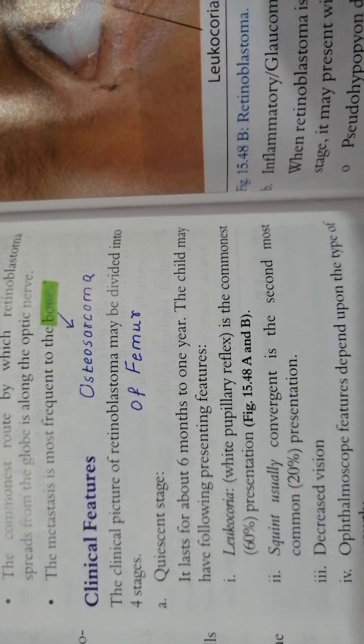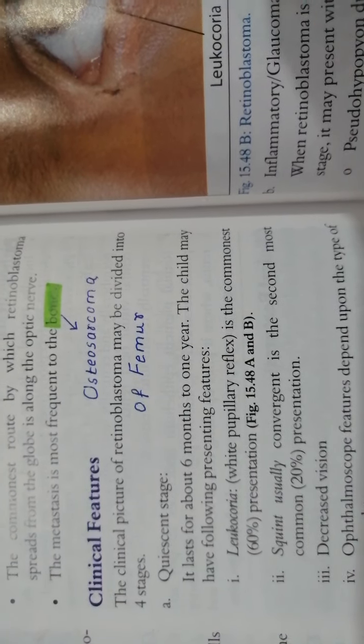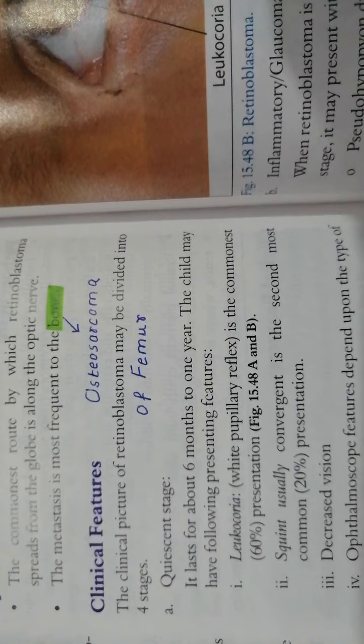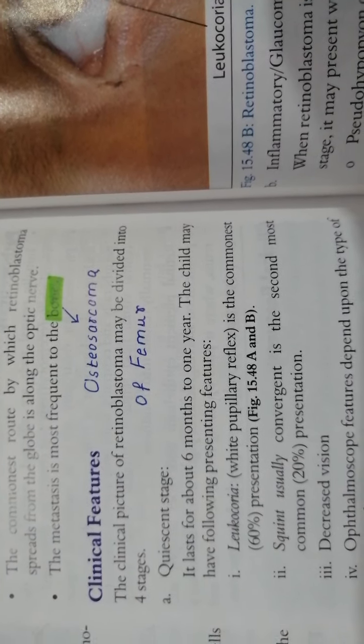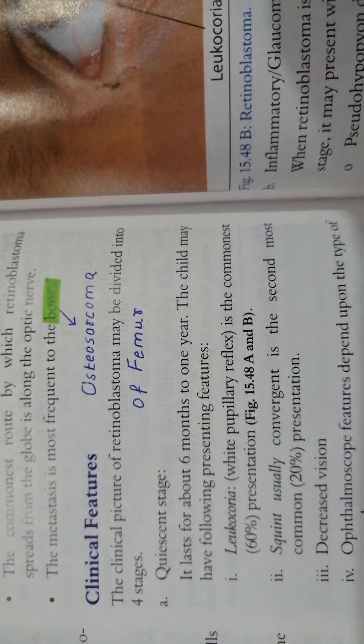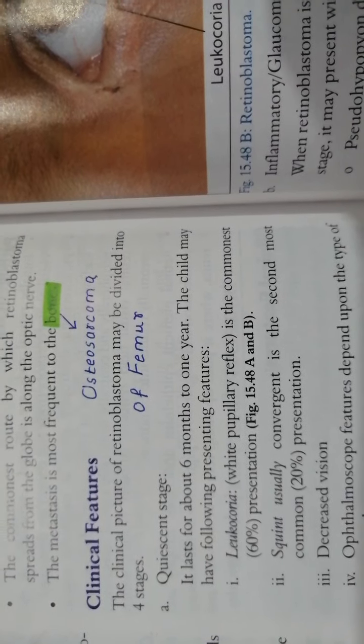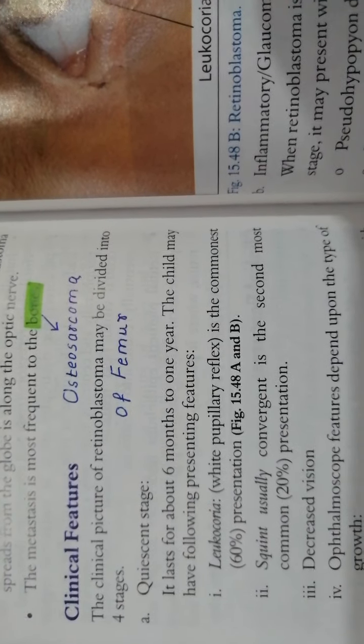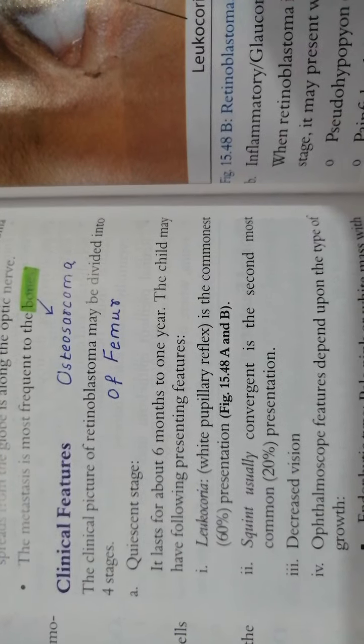In someone with retinoblastoma, that normal reflection is prevented by the presence of the tumor. And so characteristically, bilateral whitish and bilateral white pupillary reflex appears. And that can be elicited via ophthalmoscope by the ophthalmologist.